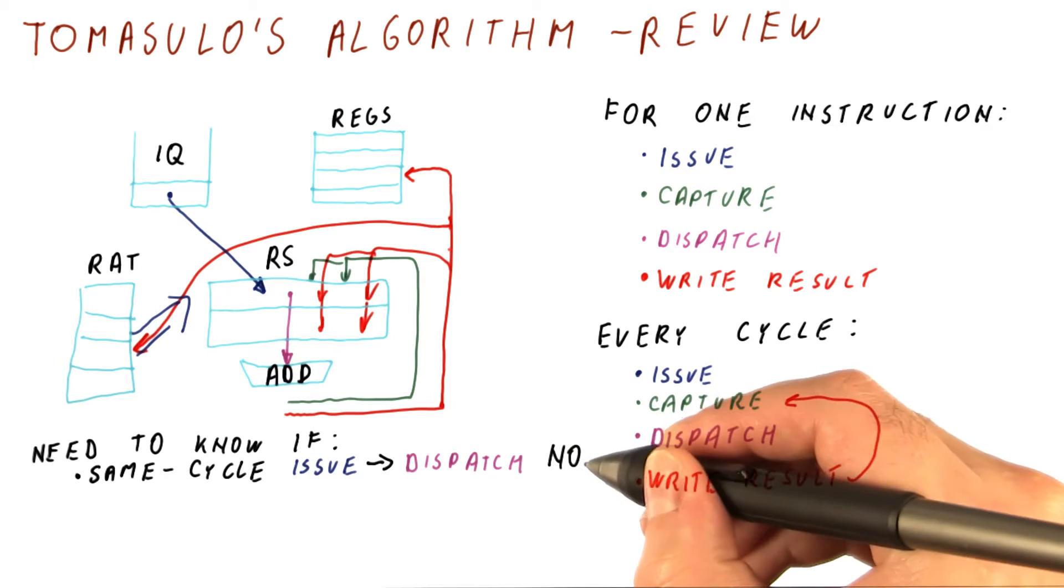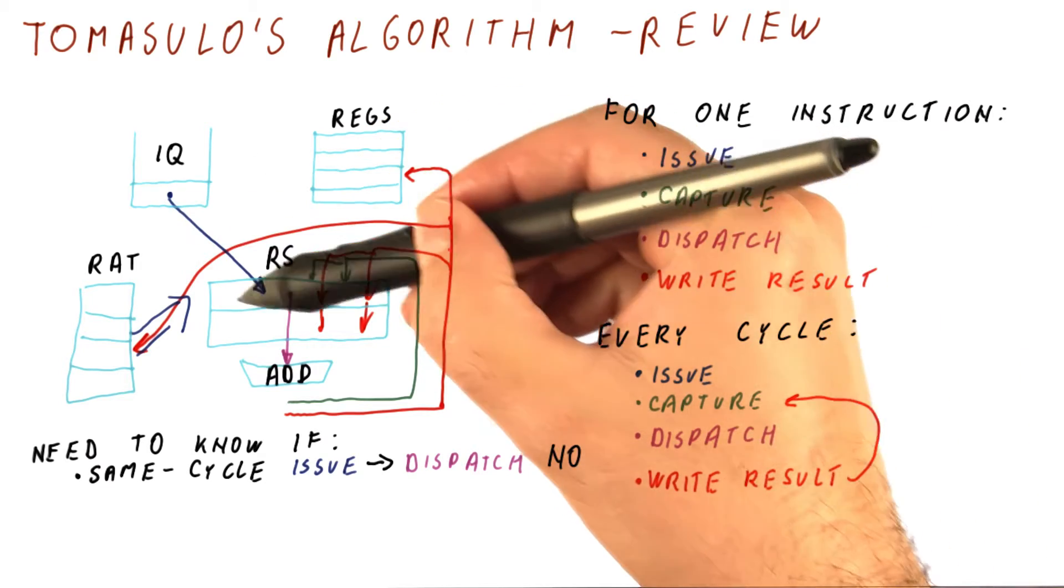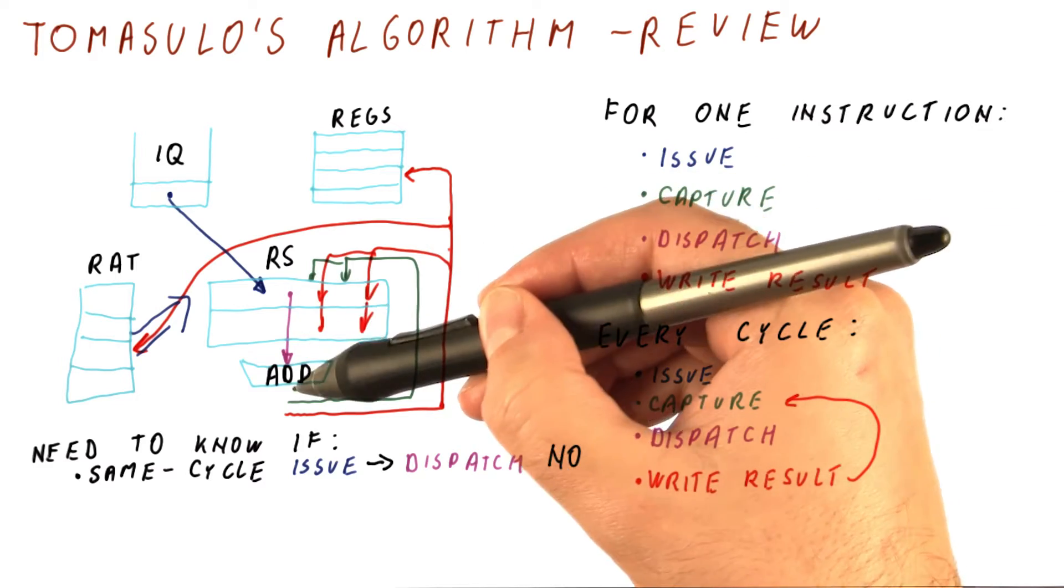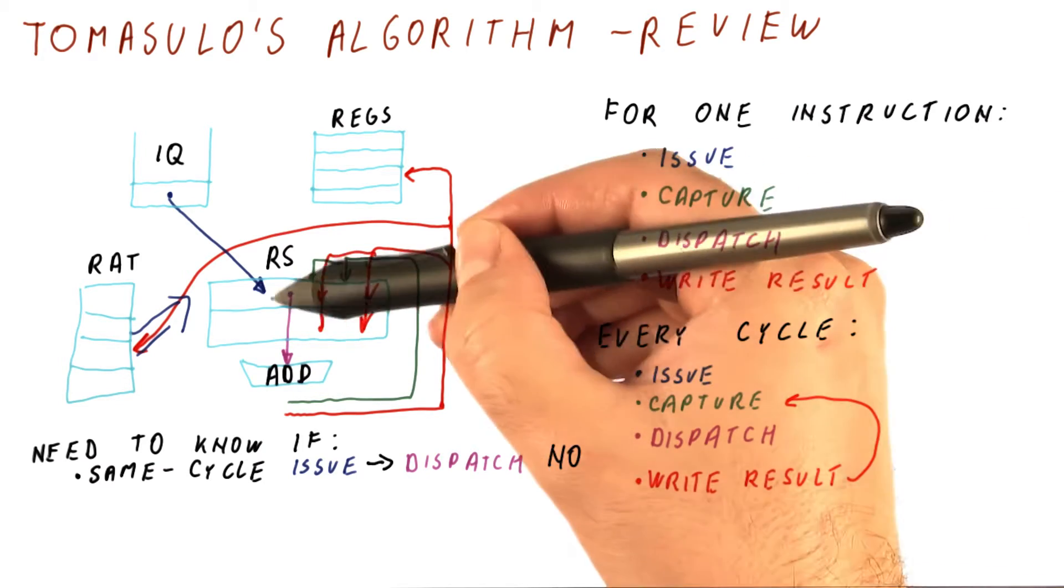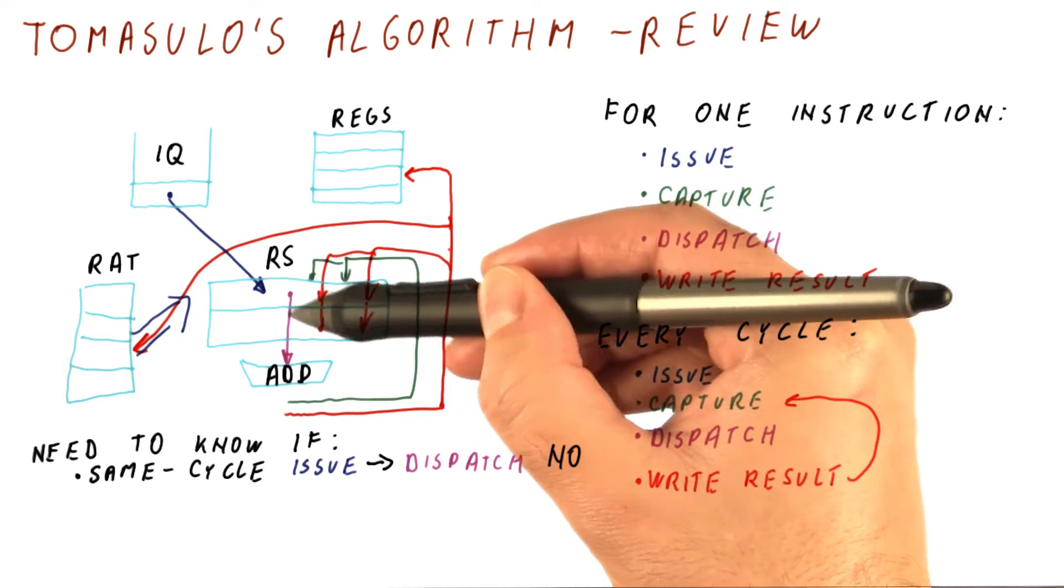Typically, the answer here is no. Why? Well, because while issuing the instruction, we are putting stuff in its reservation station. And usually to dispatch, we need to test what's in the reservation station. So during the issue cycle, we are writing to the reservation station.